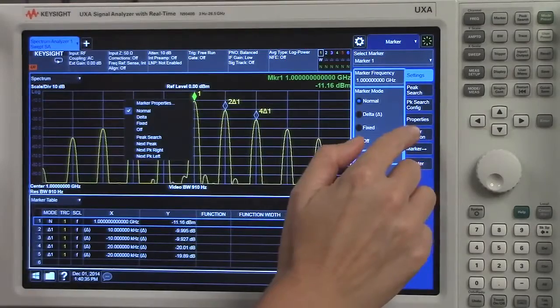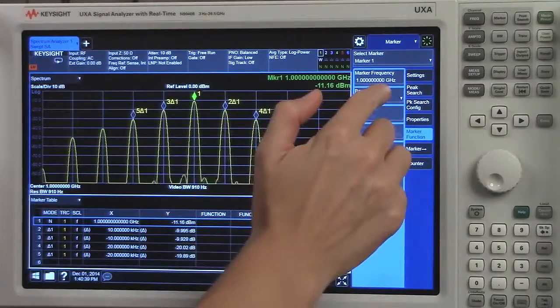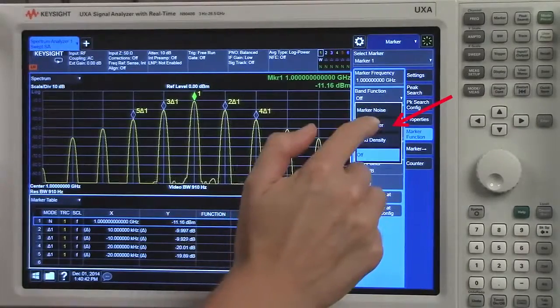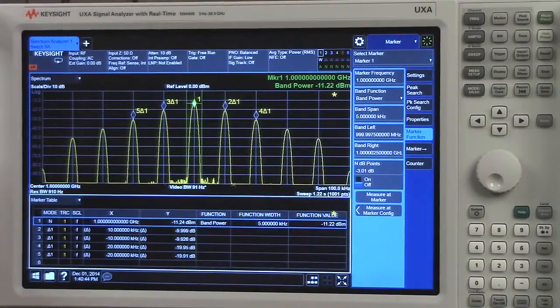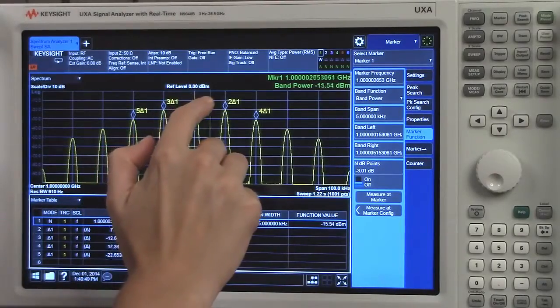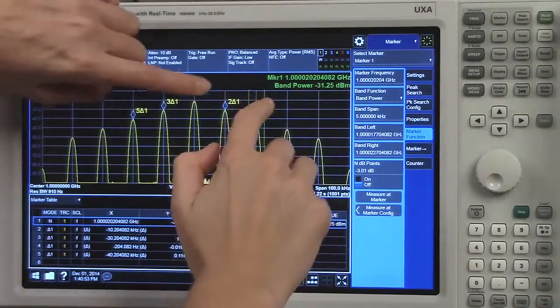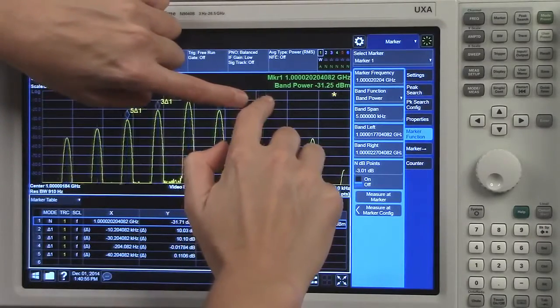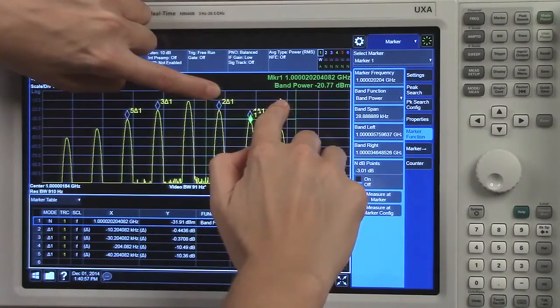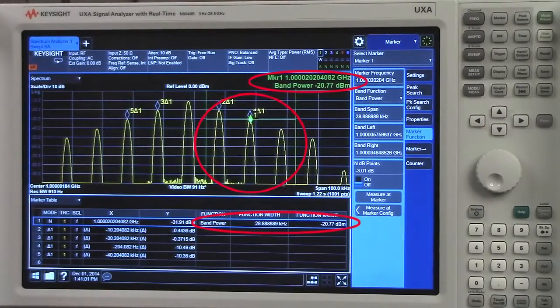Another great feature underneath our marker function, we have the ability to make band power measurements. So I'll select band power. You can see now that we have a band power marker. I'll drag this to the right a little bit. And then if I use two fingers, I can expand that. Now I'm measuring the band power of three of the tones.